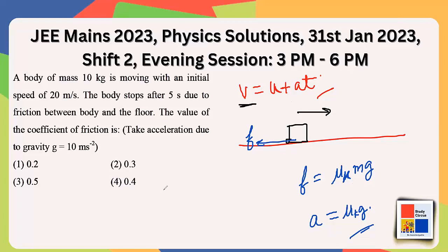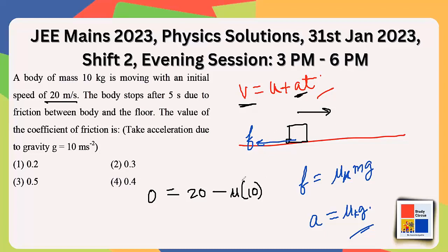The block ultimately stops, so V = 0. Applying V = U + AT: 0 = 20 minus mu times 10 (taking g = 10) times T. T is given as 5 seconds, so we write 5 here.